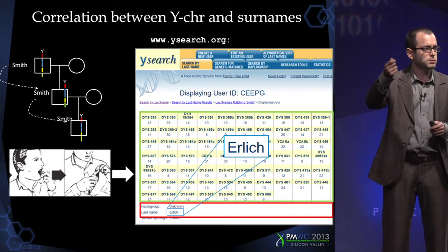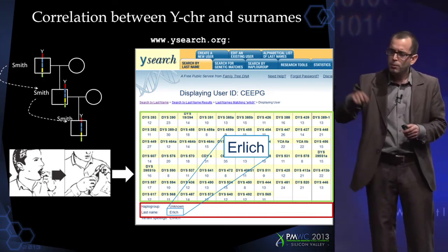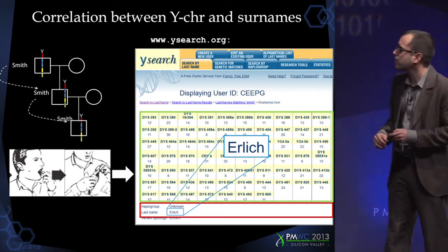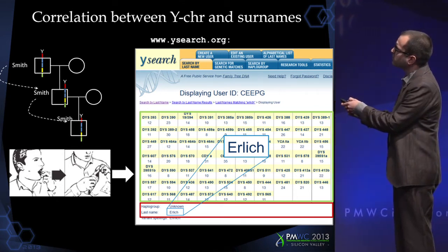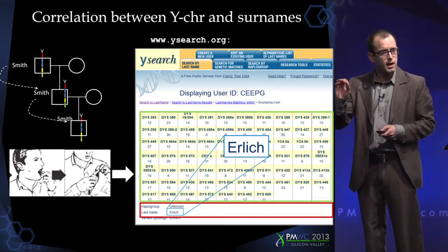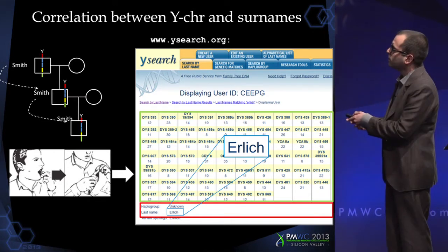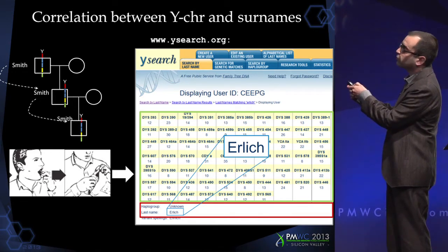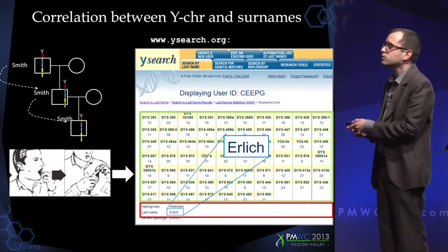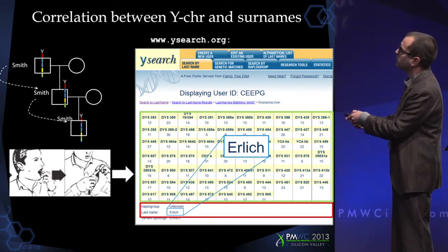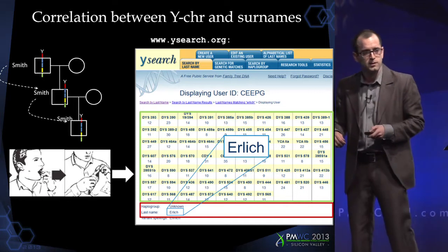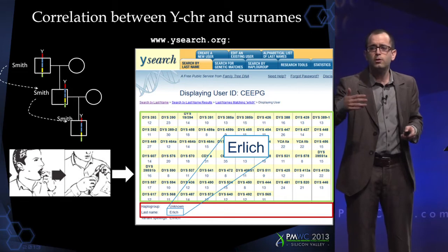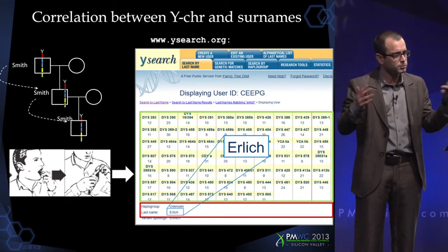This process continues and will only break up by non-paternity events, mutations, and explicit surname conversions. This idea led to the emergence of recreational genetic genealogy. Companies now offer to send you a swab, you sample DNA from your cheek, put it in an envelope with $200, and they genotype a series of short tandem repeats (STRs) on your Y chromosome together with your surname and put it in a database — for instance, ysearch.org. You can check this database right now; in fact, what you see here are my own test results from last summer.